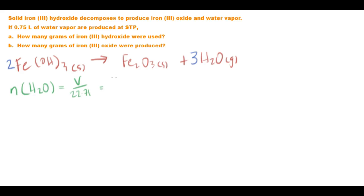So we have 0.75 litres over 22.71 is going to be 3.30 times 10 to the negative 2 moles. Beautiful. So we have the number of moles of our water.